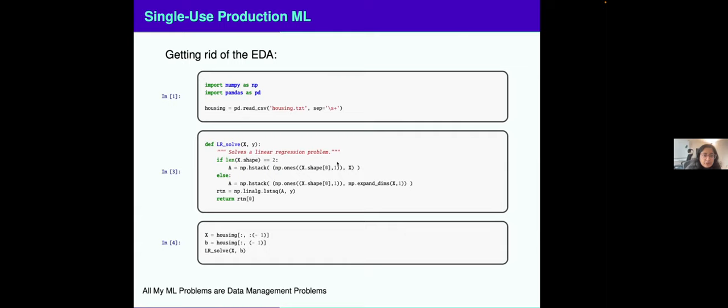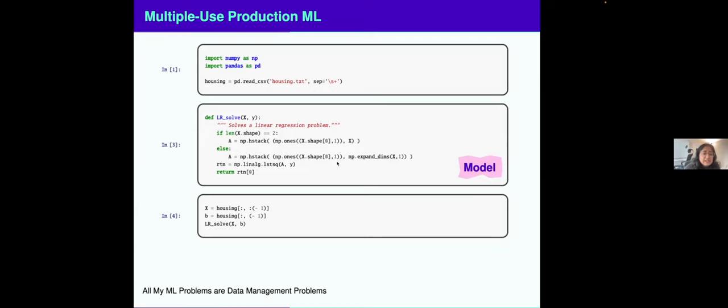What does it mean to really productionize something like this? One mode of production ML, I call single use production ML. That is, I want to take the results from this workflow and present them to someone else or have that inform business decisions. So maybe I'll clean it up, get rid of my EDA, and I only include the relevant code. Then I submit these results, and I am happy I call it a day. There's also another mode of production ML, which I'll call multiple use production ML, which is I want to run this on a regular basis when the underlying data is changing.